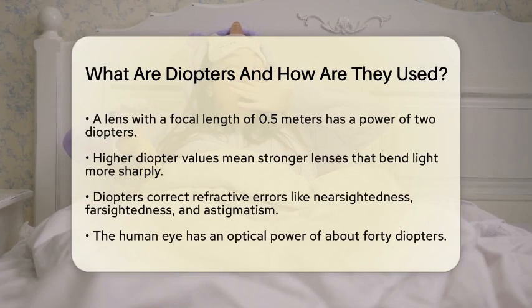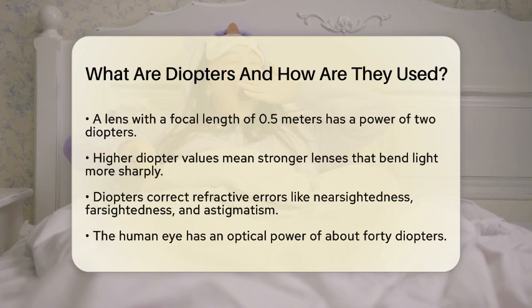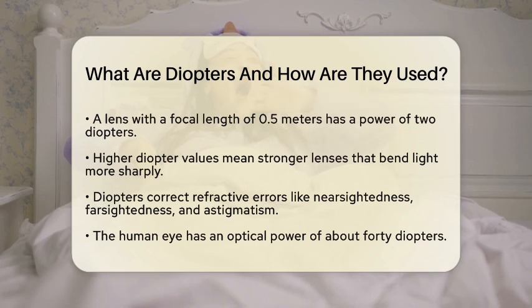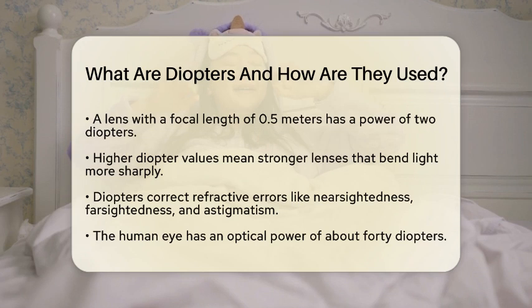If the focal length is 0.5 meters, then the power is two diopters. The higher the diopter value, the more sharply the lens bends light and the shorter its focal length.